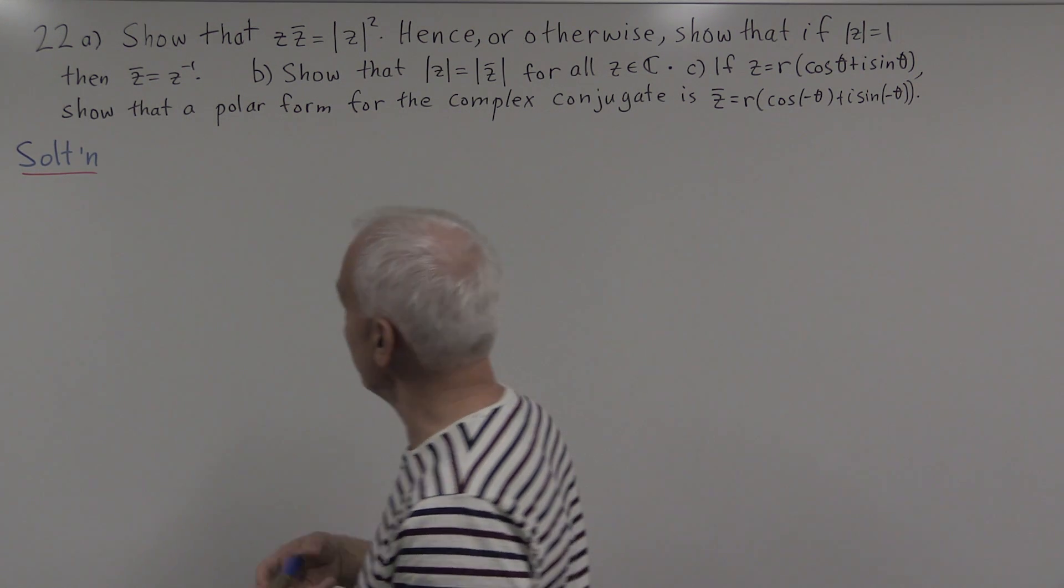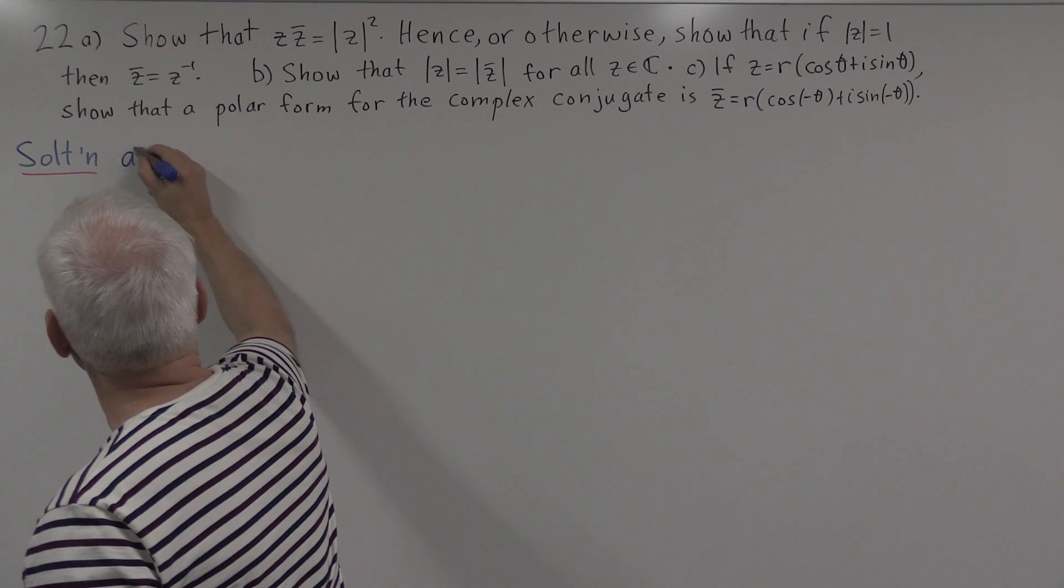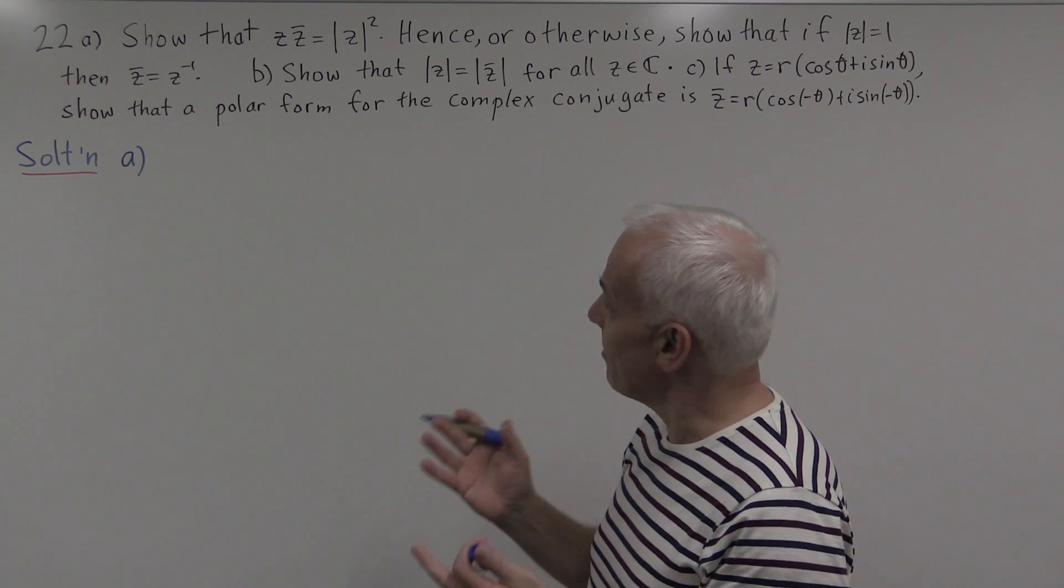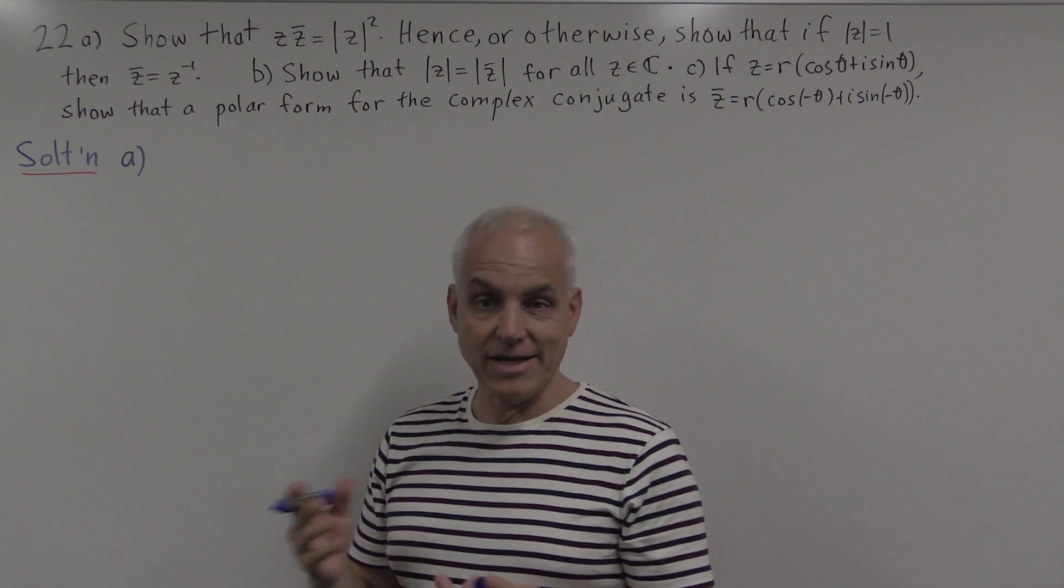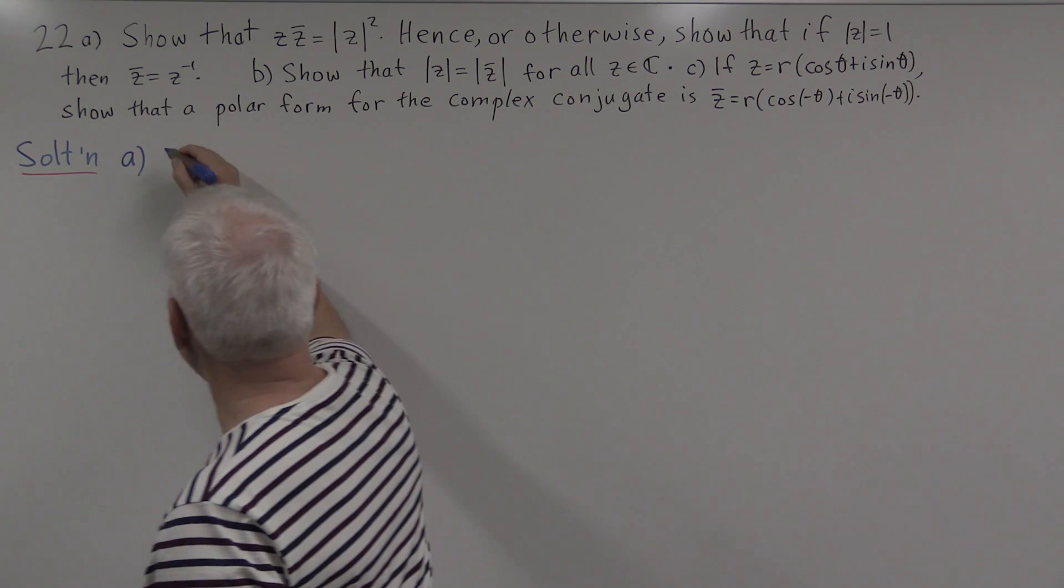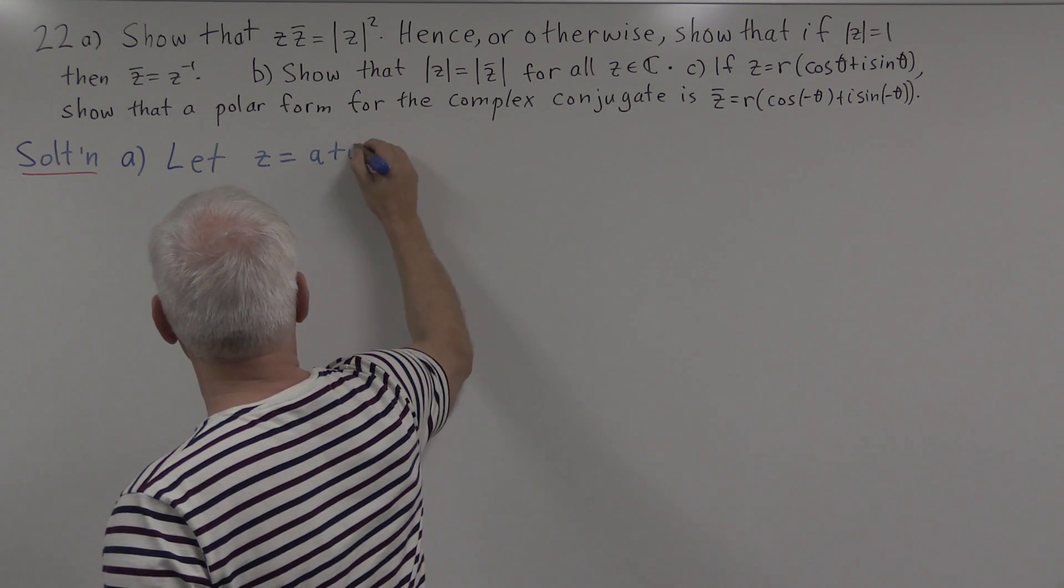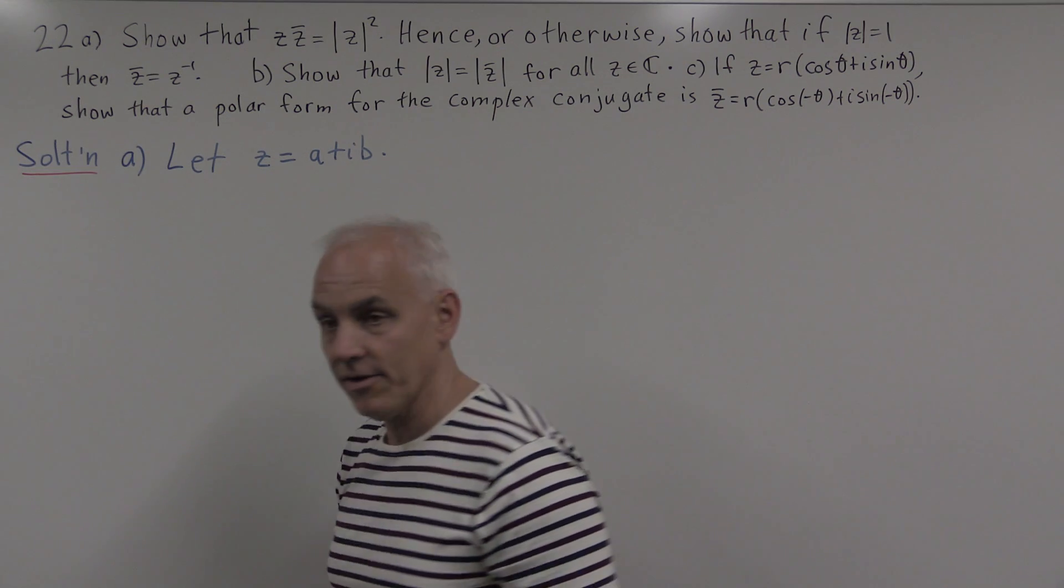Alright, let's have a look at that and see if we can make some sense of it. We're talking about an abstract situation here with z a general complex number, so let's let z be a + ib, to be specific.